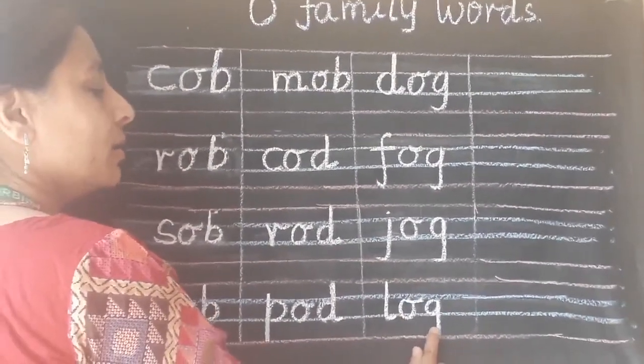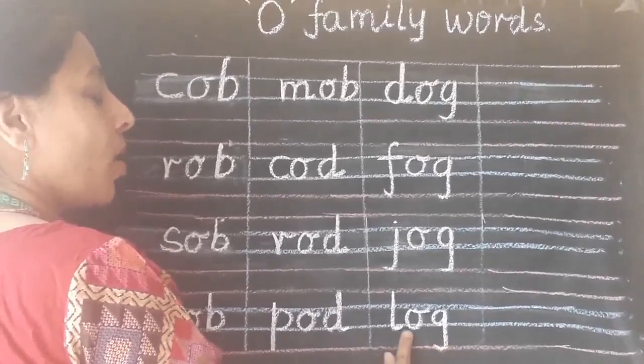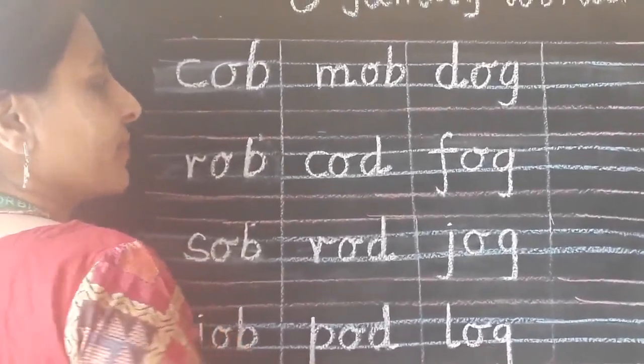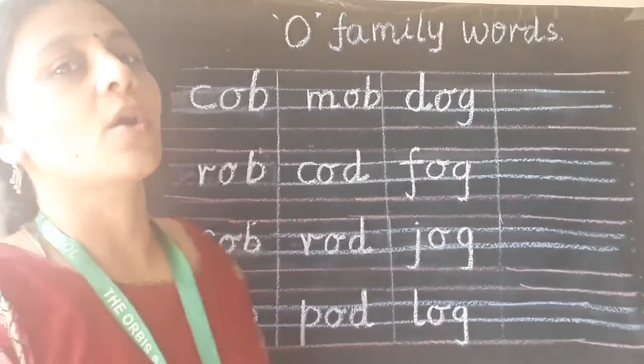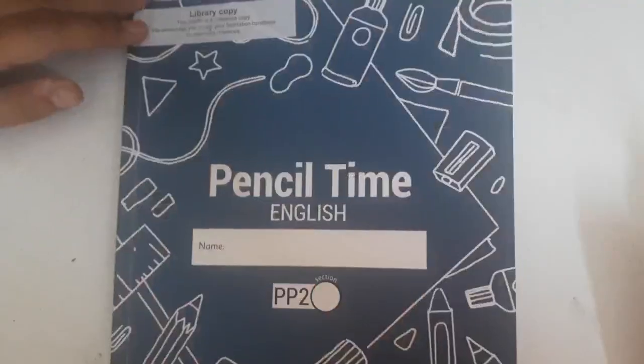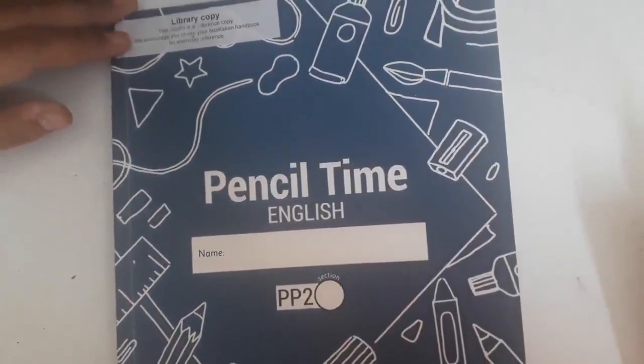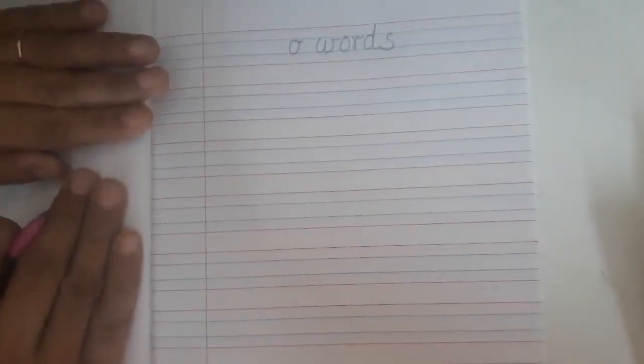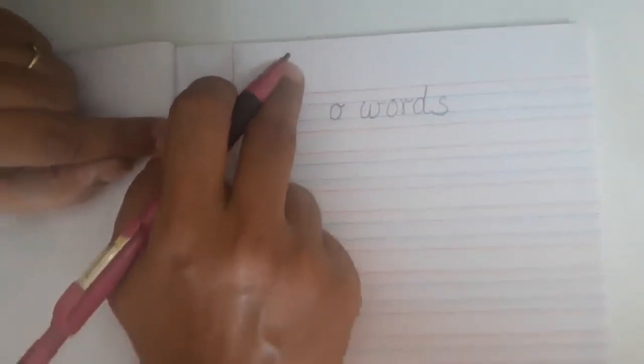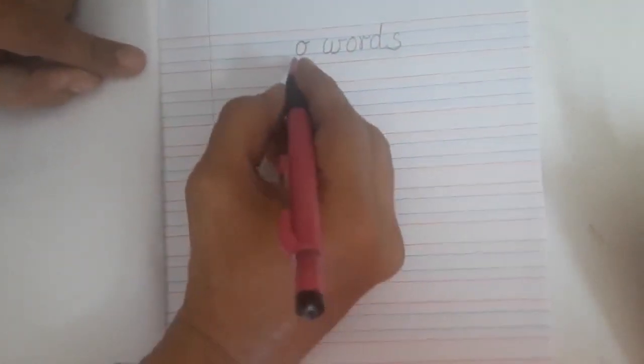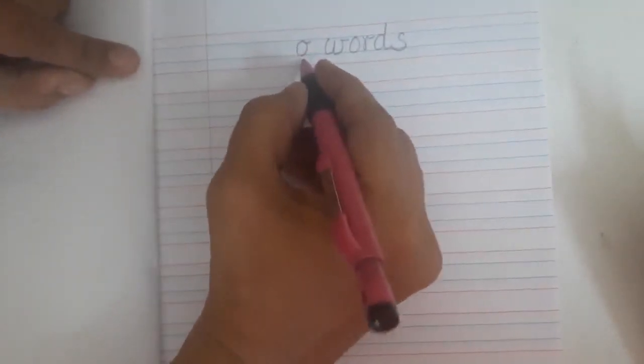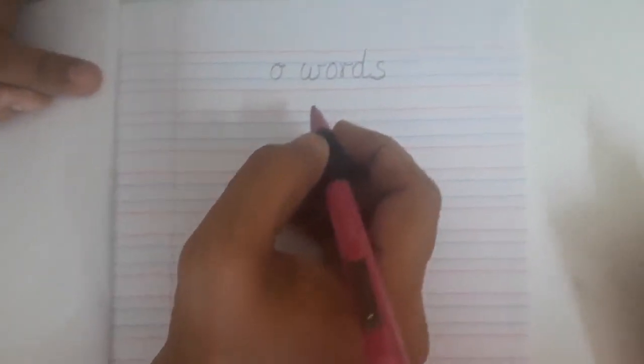L-OG, LOG. L-OG, LOG. This way you are going to revise all three letter words. Now children open your pencil time English book. Now here first of all you are going to write today's date. And today we are going to write O words. So here you are going to write heading O words.